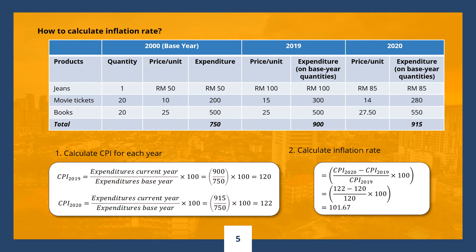Let's find total expenditures for 2019. We have three products: jeans, movie tickets, and books. For each product, we multiply the quantity by its price. One unit of jeans multiplied by its unit price of RM100 gives us RM100 worth of jeans. Twenty units of movie tickets multiplied by RM15 gives us RM300. Twenty units of books multiplied by RM25 gives us RM500. So the total expenditure for 2019 is RM900.